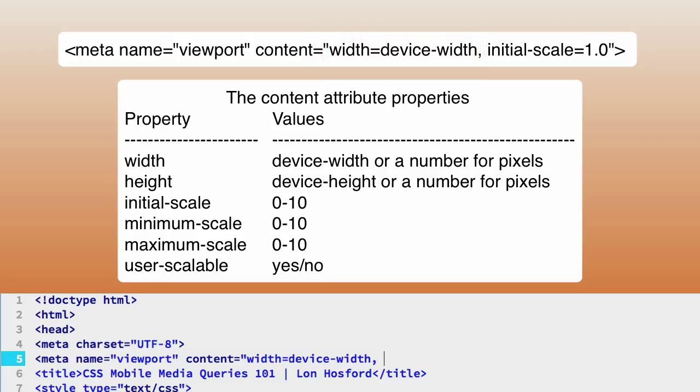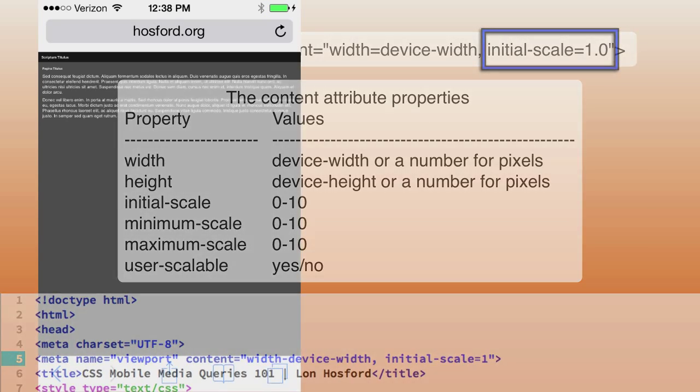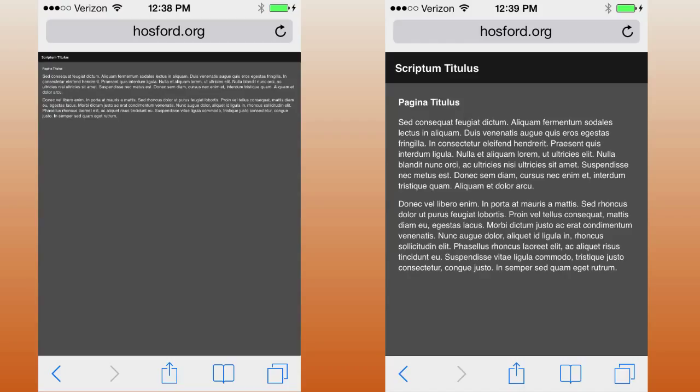Finally, you want the initial-scale property set to one so that all the content fits within the actual device screen, leaving it up to the user if they want to zoom in on their own. Here you can compare our web page with and without the viewport meta tag. The one on the left doesn't have it, and the one on the right has width set to device-width and initial-scale set to one.